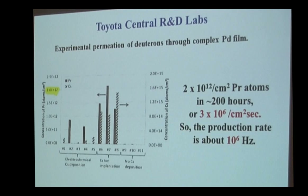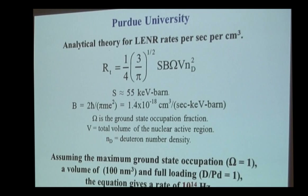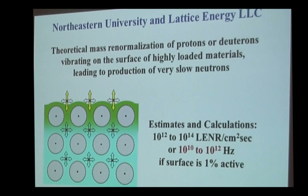The Toyota Central R&D lab replicated this experiment and reported it at the last conference. Their data was per centimeter squared, so you have to assume an area to come up with a rate — a very low rate. Turning from experiment to theory, Young Kim reported last year an update of something he started in 1999, and he gets a rate of 10 to the 14th from his work.